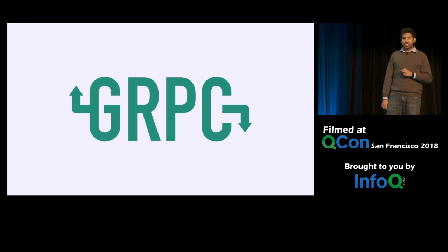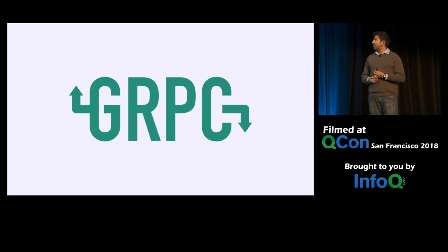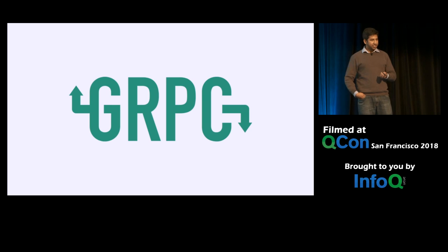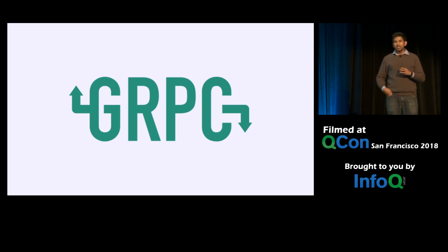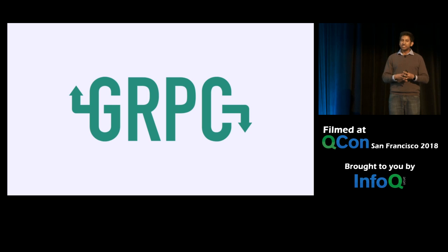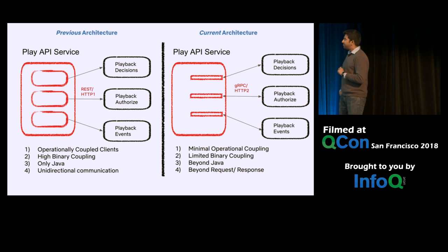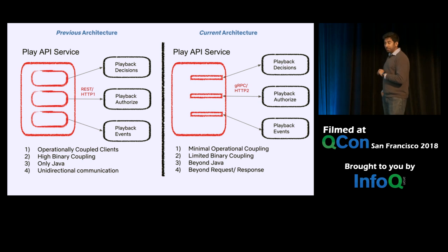Based on this, we settled on gRPC as our framework of choice. gRPC provides protocol buffers as the IDL, and we are able to define our APIs and have clients automatically generated in all languages of interest. It also supports Netty and HTTP/2 for bi-directional communication. However, we did still have to enable ecosystem components — we needed to build some ecosystem compatibility within the gRPC framework to make it work within Netflix. The result compared to the previous architecture: very minimal operational coupling, limited or intentional binary coupling, ability to go beyond Java, and freedom to explore beyond request-and-response style APIs.